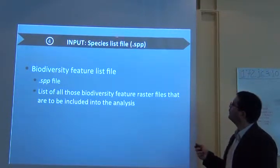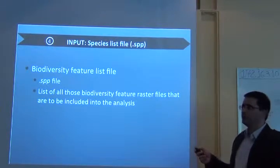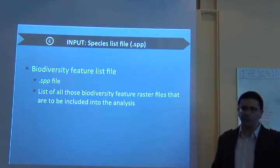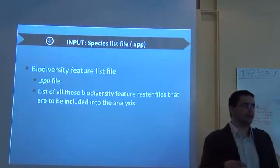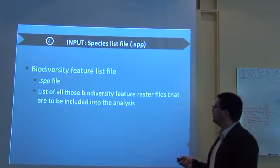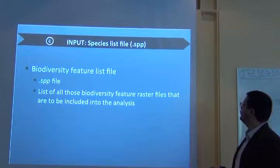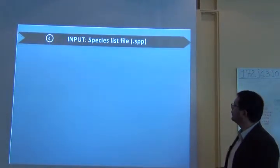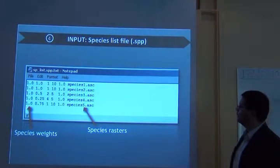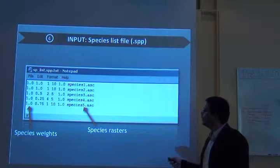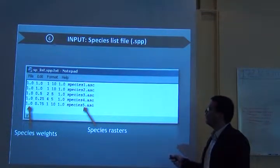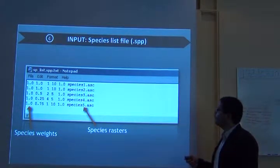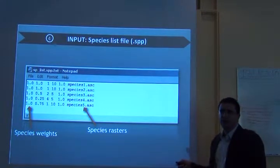Then you have to do a species list file, this .spp file. This file actually informs zonation where are the rasters of the species. So it is a list of all those biodiversity feature raster files that are to be included in your analysis. It should look like this. So here goes the number of the raster file for a species. If you're calling those species species 1, 2, 3, then this is the name of the file.